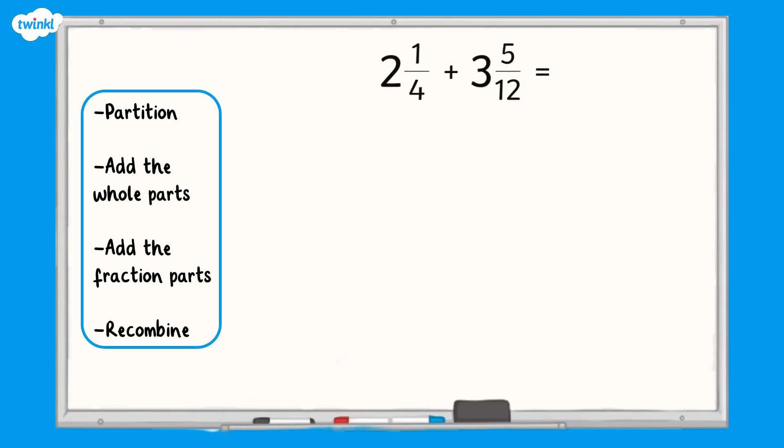Two and a quarter add three and five-twelfths. We can work through our steps like we did before so first we partition the mixed numbers. Next we add the whole parts. Two add three which equals five.